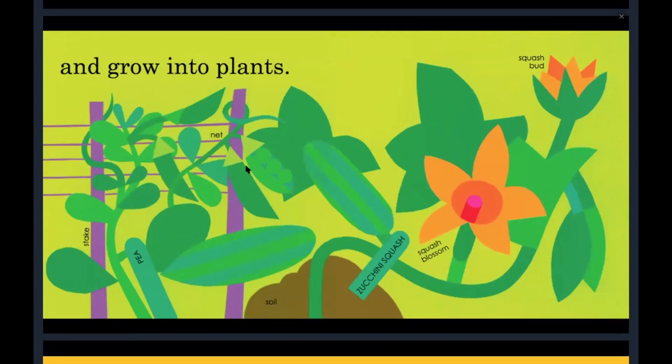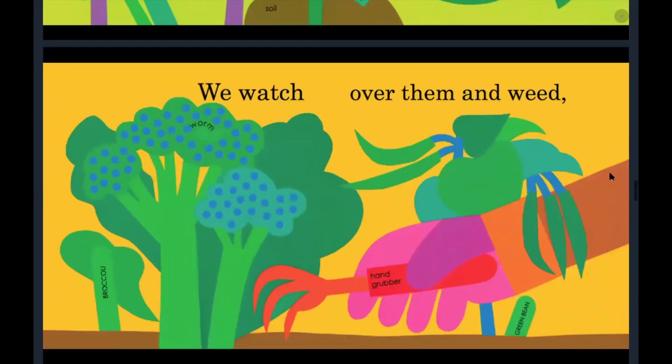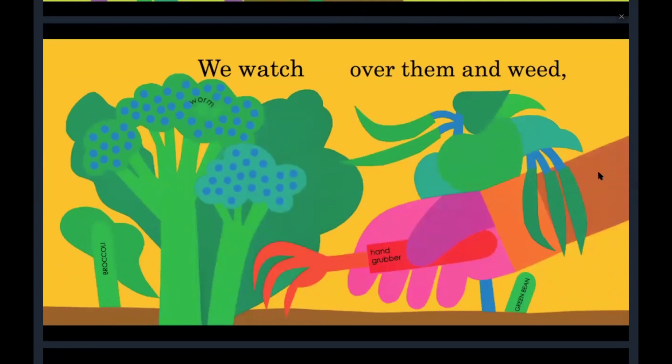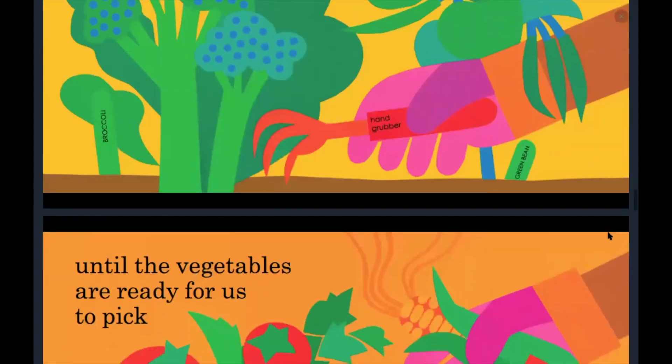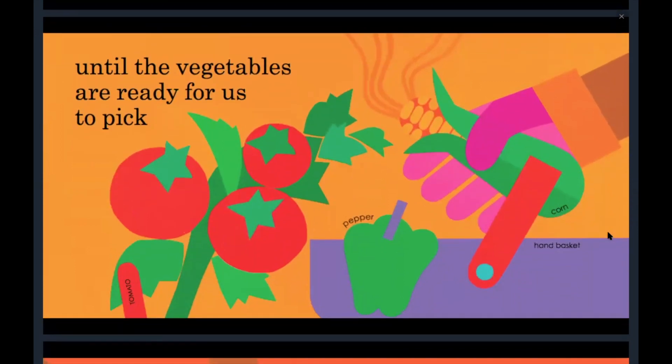So here's some peas in a pod, some squash, some squash blossoms. We watch over them and weed. They're using a special little rake to dig, dig in the soil. Keep the plants with enough space until the vegetables are ready for us to pick.